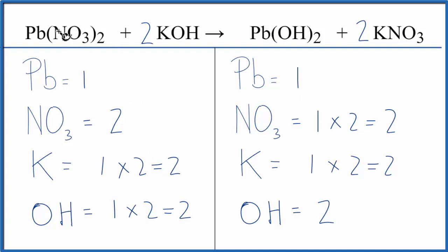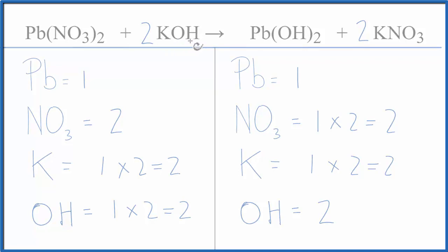So by counting our polyatomic ions as one item, if they appear on both sides, saves us a lot of time. This is Dr. B with the balanced equation for lead 2 nitrate plus potassium hydroxide. Thanks for watching.